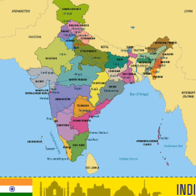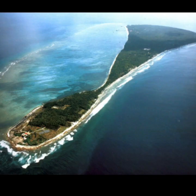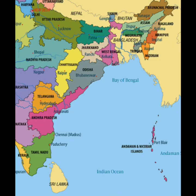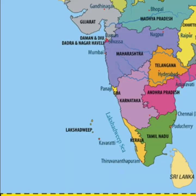In the Indian map we can see two island groups: the Andaman and Nicobar Islands in the Bay of Bengal, and the Lakshadweep Islands in the Arabian Sea. These are part of India and come under the location of India.